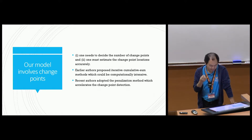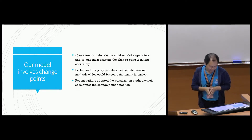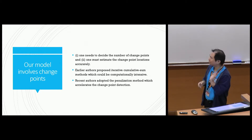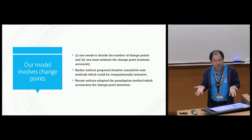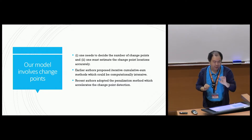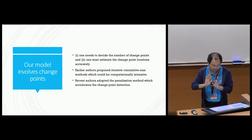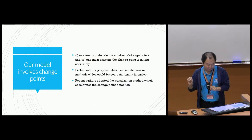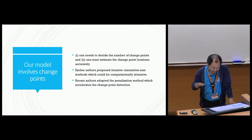In the change point estimation area, there are usually two important questions to answer. The first is: we want to decide the total number of change points. That number is not a Euclidean parameter — it must be estimated, and the estimation is usually very hard. The second question is finding the location of the change points accurately. If there is only one change point, that's relatively easy. But if you don't know how many change points there are, you need to first find their locations. These two questions must both be answered.